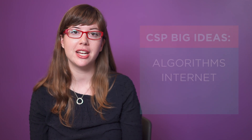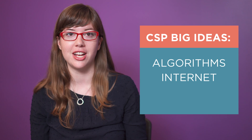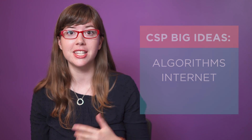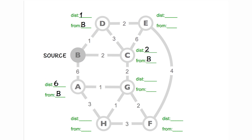This lesson serves as the last lesson in a short series of unplugged activities focusing on the big ideas of algorithms and the internet. This lesson connects back to the internet by showing how routers on the internet learn about the best ways to route traffic. In previous lessons where students considered shortest path algorithms, they could see the entire graph and consider it when tracing through the shortest path algorithm.